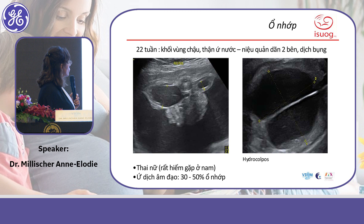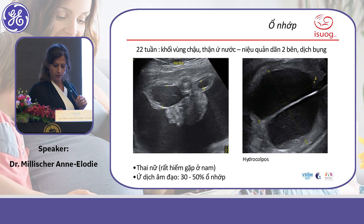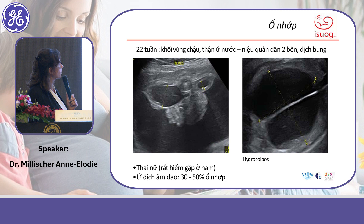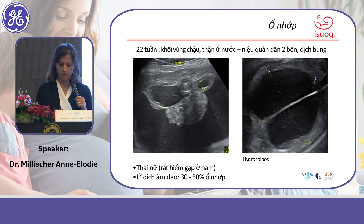Here is an example of hydrocolpos in a female fetus. It was initially thought to be a septate bladder, but it was actually a hydrocolpos due to a vaginal septum, as you can see with associated uterine hydronephrosis. We see two fluid-filled structures with a central septum dividing them into two equal parts — the vaginal fluid collection and the bladder.